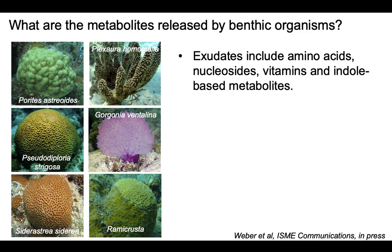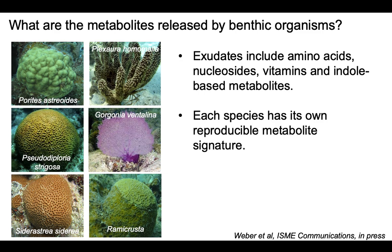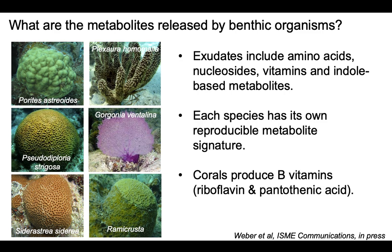These include amino acids, nucleotides, vitamins, as well as endo-based metabolites, which have important roles in the growth of many microbes. Using both the targeted and untargeted methods, we showed that each benthic species has its own reproducible metabolite signature. This is not random — they are always producing the same kinds of metabolites. We found that corals, both stony and octocorals, tend to produce a lot of B vitamins, especially riboflavin and pantothenic acid, which are important factors for enzymes and coenzymes impacting cellular metabolism.